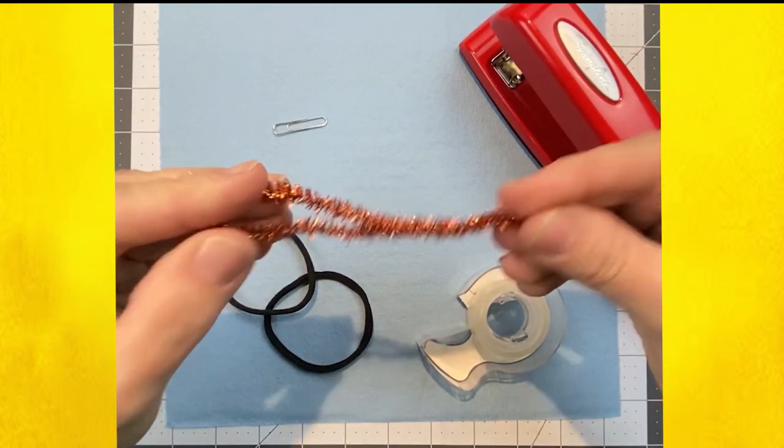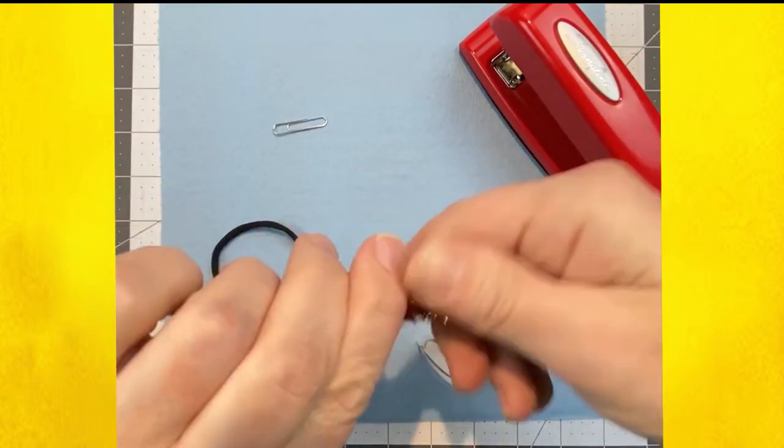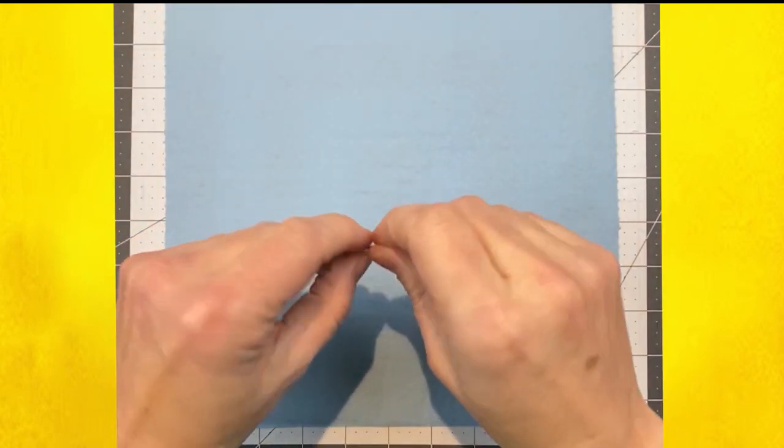Unbend the paper clip and get it as straight as you can. The last half inch or so needs to be bent around into a little loop on each end.